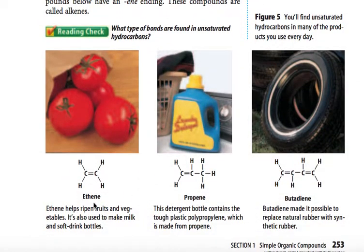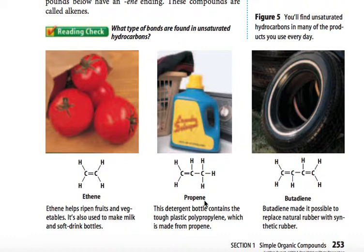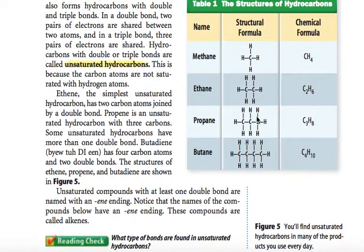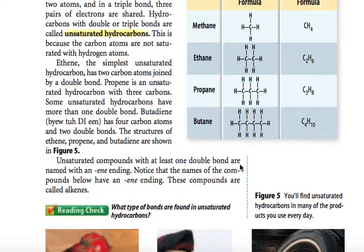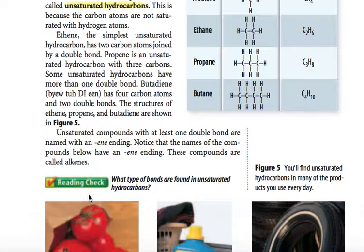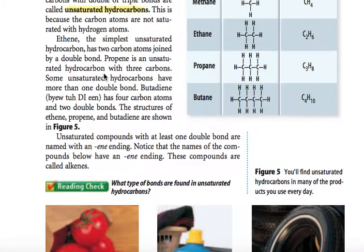Looking at Figure 5: here's ethene with a double bond, propene with a double bond, and butadiene with two double bonds and four carbons. These names sound similar to ethane, propane, and butane. The difference is the naming convention changes for unsaturated hydrocarbons: it was -ANE for saturated hydrocarbons with single bonds, and it's -ENE if it has a double bond. That nomenclature is how scientists tell the difference. Unsaturated compounds with at least one double bond are named with an -ENE ending and are called alkenes.